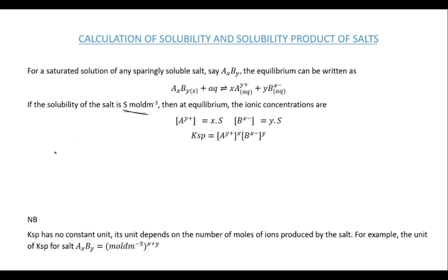Let's look at an example. We have calcium chloride, CaCl₂. At equilibrium, calcium dissociates as Ca²⁺ and chlorine as Cl⁻. Since there are two chloride ions, we write a coefficient of 2 in front of Cl⁻, and calcium has a coefficient of 1.